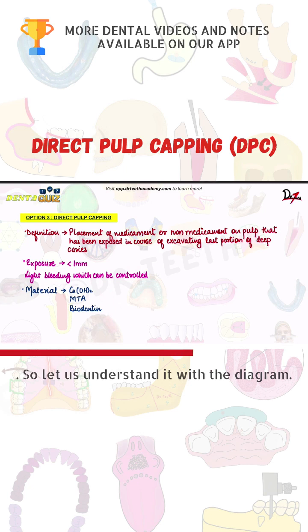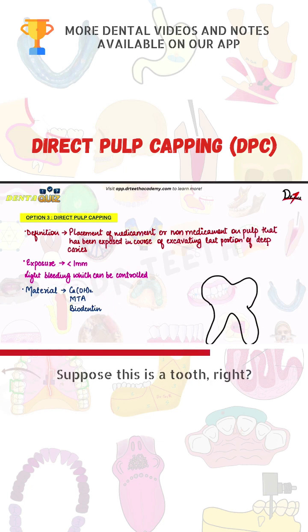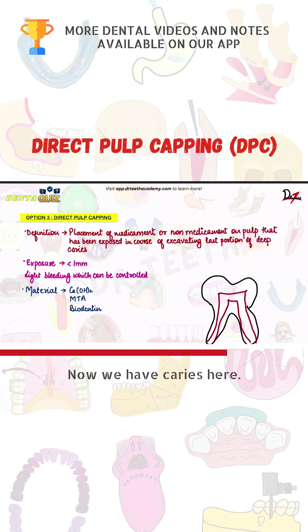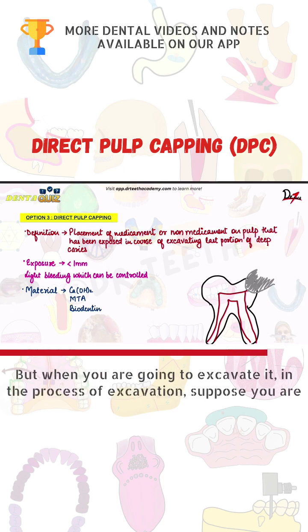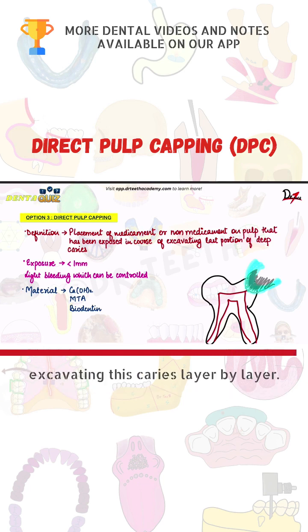Let us understand it with a diagram. Suppose this is a tooth and this is the pulp. Now we have caries here — although the caries is deep, it has not involved the pulp yet. But when you are going to excavate it, in the process of excavation, suppose you are excavating this caries layer by layer.